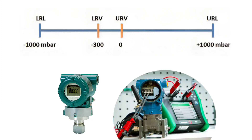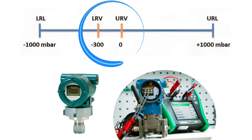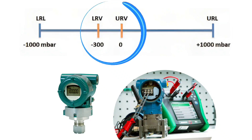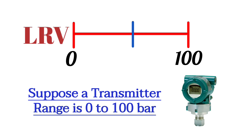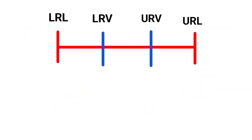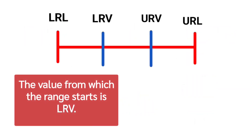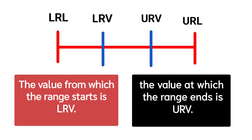First, let's understand LRV and URV and how you will know about these values. For example, suppose the range of a transmitter is 0 bar to 100 bar. In this case, LRL is 0 bar and URV is 100 bar. The value from which the range starts is LRL, and the value at which the range ends is URV.